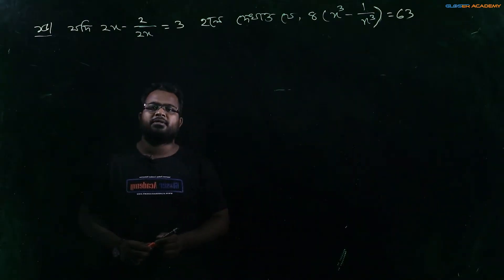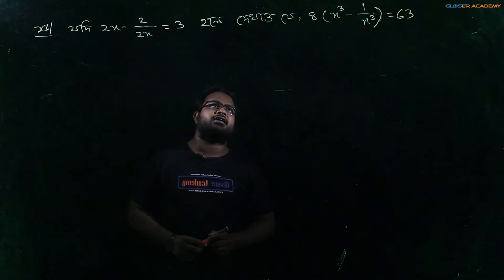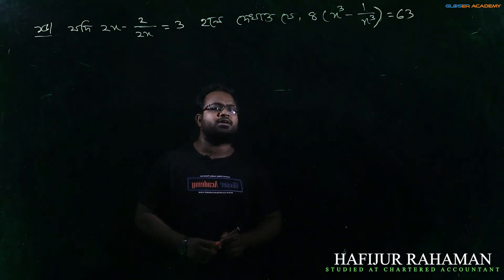The first number is 2x minus 2 by x, 2x equals 3. So let's see, 8x cube minus 1 by x cube equals 63.